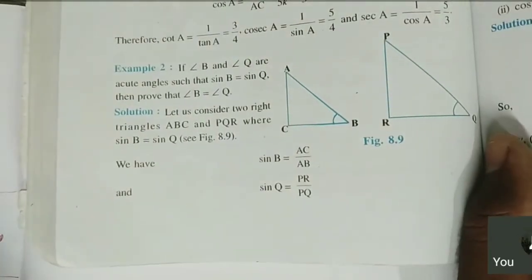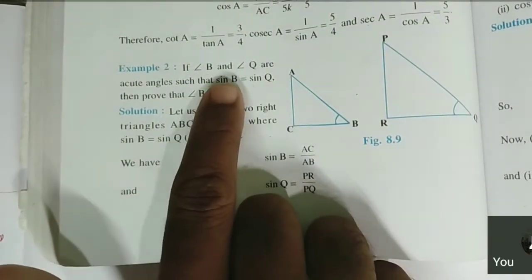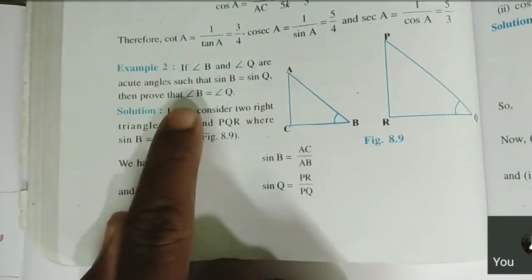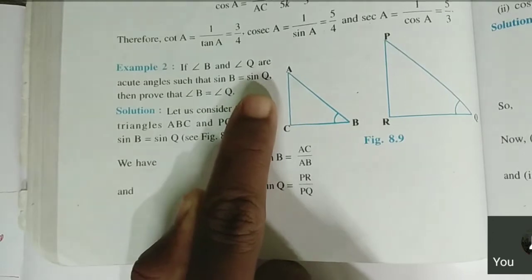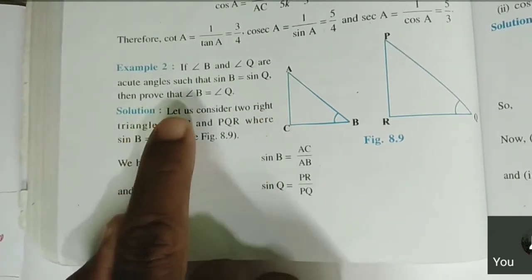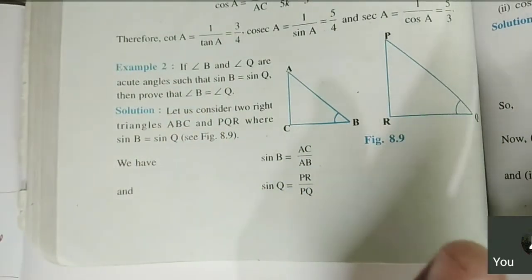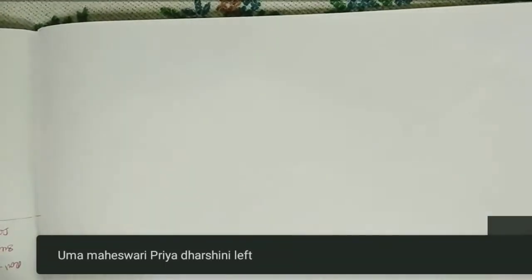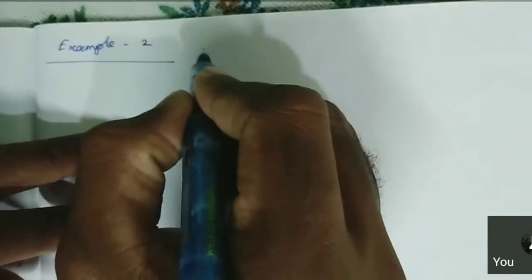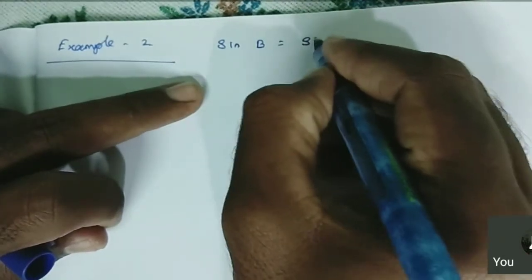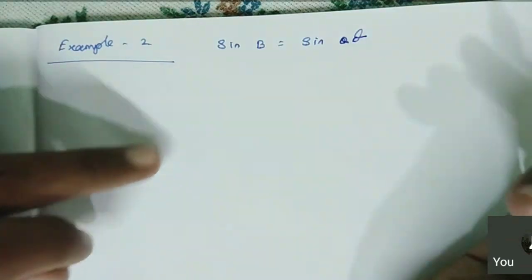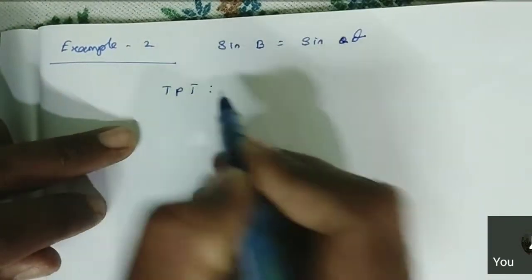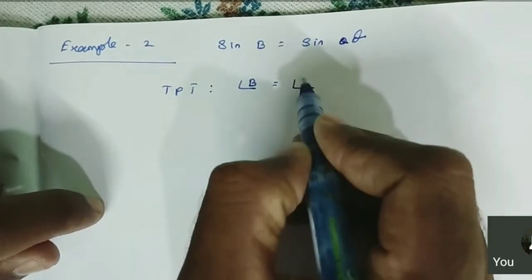Example 2, page number 178. If angle B and angle Q are acute angles such that sine of B is equal to sine of Q, prove that angle B is equal to angle Q.